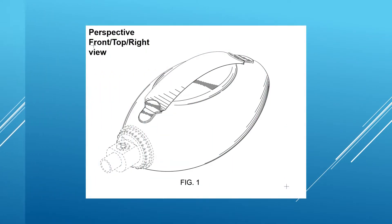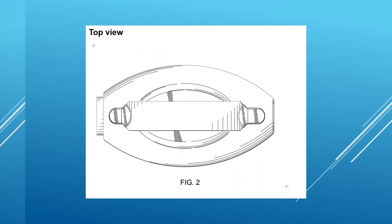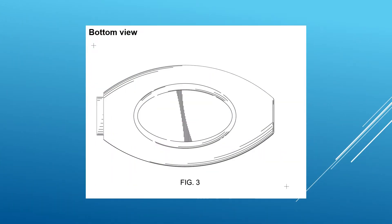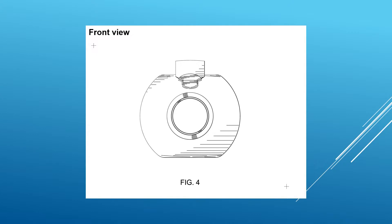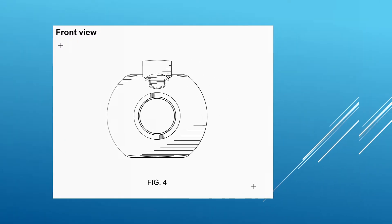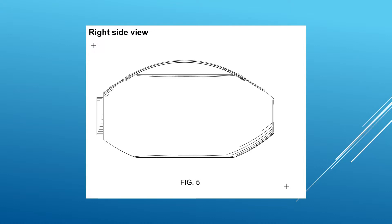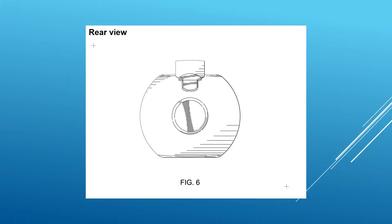They should contain a sufficient number of views to completely disclose the invention. Typical views consist of a top view, bottom view, front view, right side view, left side view, and rear view.